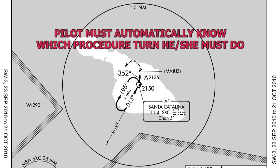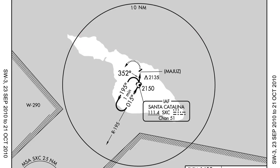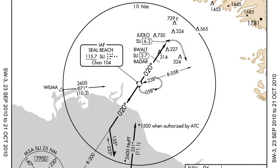Let's talk about when to do a procedure turn first. There are two ways noted on the approach plate that will tell us we need to do one. The first way is anytime a course is taking us away from the IAF and the initial approach fix is noted with a procedure turn depicted on that course. In this case, we will only do the teardrop procedure turn to the side depicted on the approach plate.